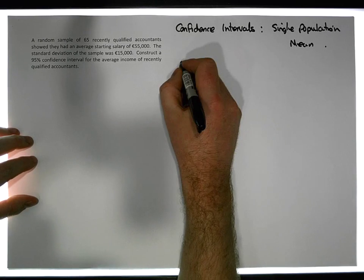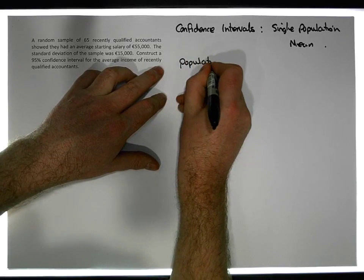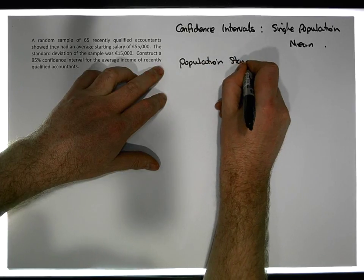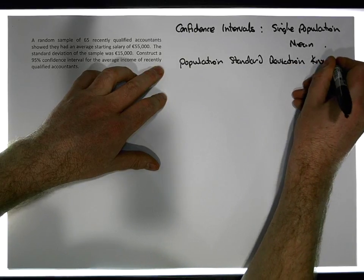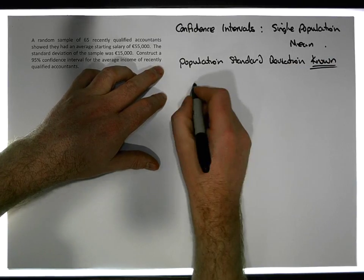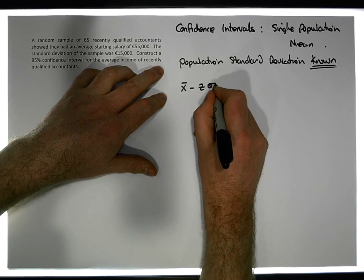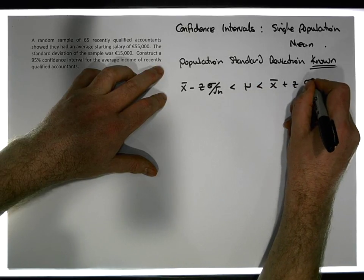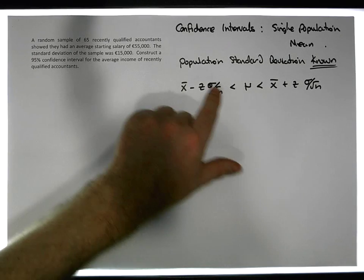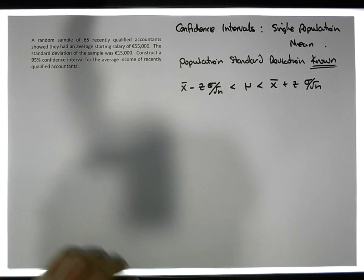We want to be 95% confident that the true population mean will be within that range. There are two ways to do this. The first formula applies when the population standard deviation is known. In that case, the formula is: x̄ minus z times sigma over the square root of n is less than the population mean, which is less than x̄ plus z times sigma over the square root of n.